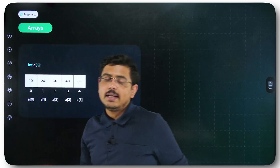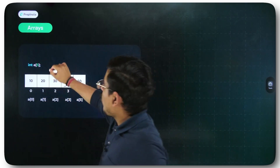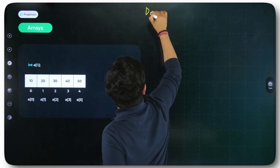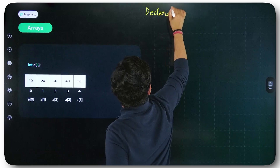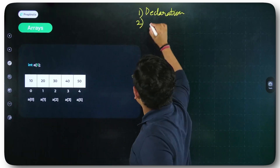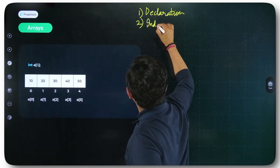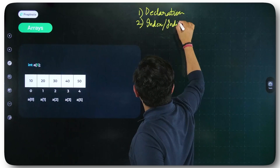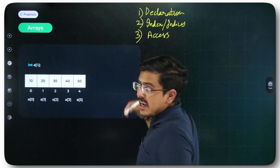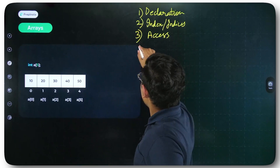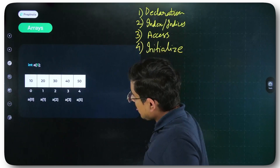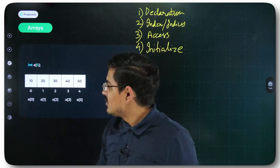In today's video I will cover four basic things about arrays: first, declaration of arrays; second, index or indices in arrays; third, how to access elements inside the array; and fourth, how to initialize an array.